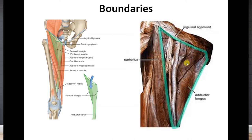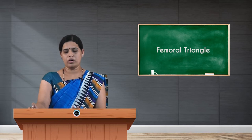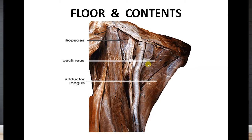Coming to the roof relations of the femoral triangle, it is the skin and superficial fascia, where you can find the cutaneous nerves and also the saphenous vein draining to the femoral vein after piercing the saphenous opening. The floor relations come from lateral to medial: iliopsoas, then pectineus, then adductor longus itself.